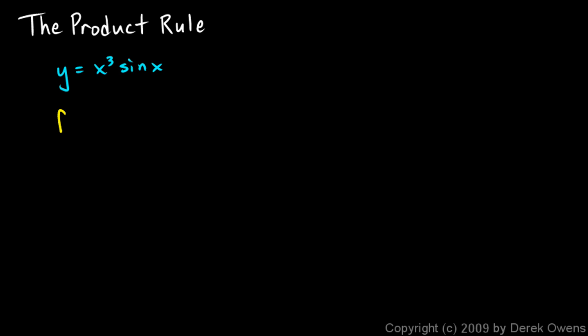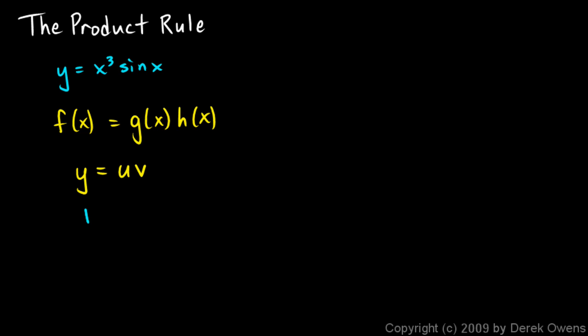The general form would be: f of x is g of x times h of x — one function that is the product of two others. A lot of times we see a more compact notation: we'll just say y is equal to u times v. So y is our function and it's a product of these two other functions. Even though we're not writing the independent variable, u and v are both understood to be functions of x, or functions of the same variable that y is a function of, usually x.